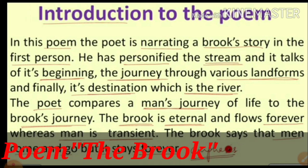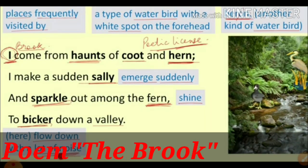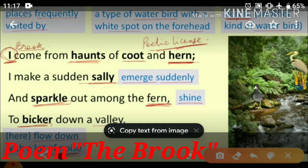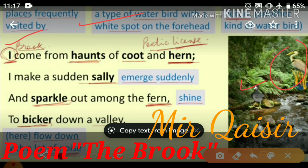Now let us start the poem — the first stanza: 'I come from haunts of coot and hern, I make a sudden sally and sparkle out among the fern, to bicker down a valley.' Here 'I' refers to the brook. Haunts are those places which are frequently visited. Coot and hern are types of water birds. The actual spelling of hern is 'heron,' which is another kind of water bird.